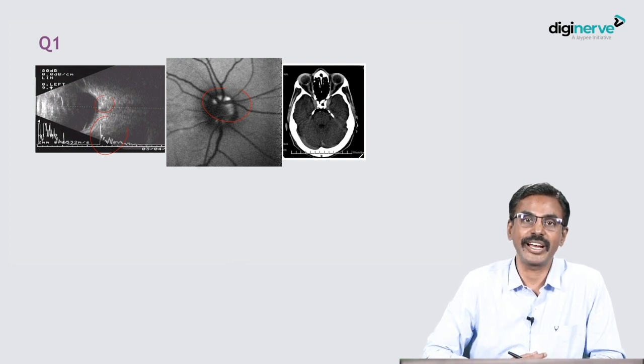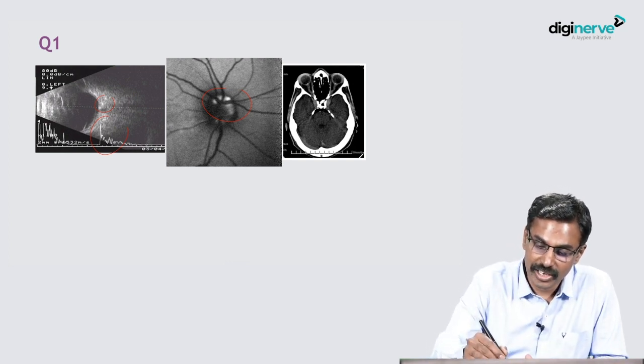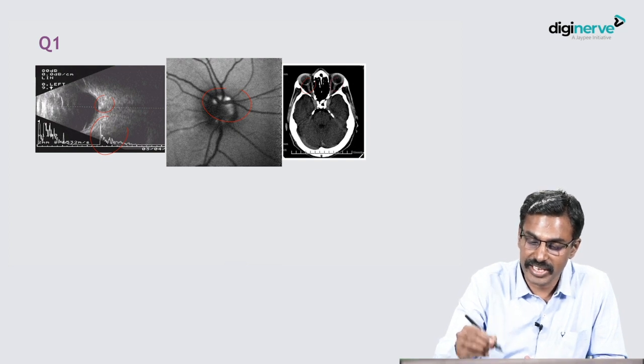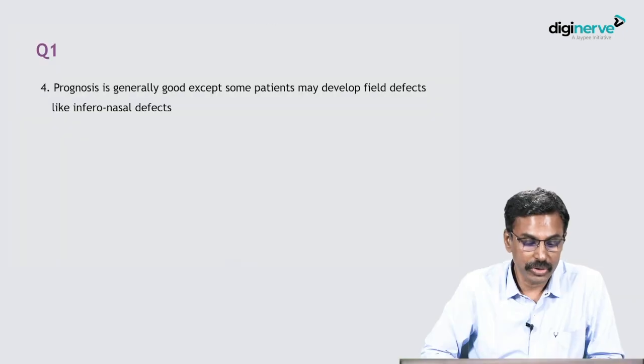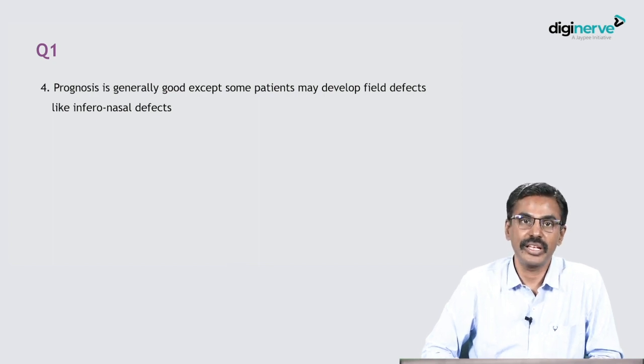Occasionally a CT scan may be done mistakenly, and in one such case drusen was detected — you can see a round calcification in the CT scan. Prognosis is generally good, except some patients may develop field defects like infranasal defects, which are very trivial field effects.